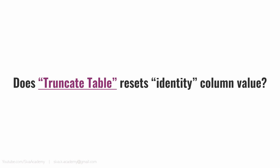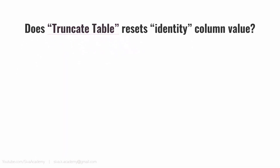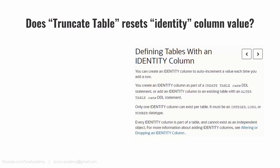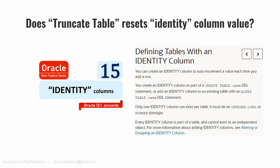Before proceeding, let us quickly understand what the identity column means. Basically, identity column is a database feature which every database provides. Using the identity column feature, we can populate the column automatically — it provides an auto-increment feature. That is, we don't have to explicitly populate the value for that column. Instead, whenever we populate values for other columns of the table, this specific identity column will get automatically populated. In Oracle, to specify the identity column, we need to give a keyword called identity as part of the column definition. To understand more about the identity column, I would suggest you watch this video.